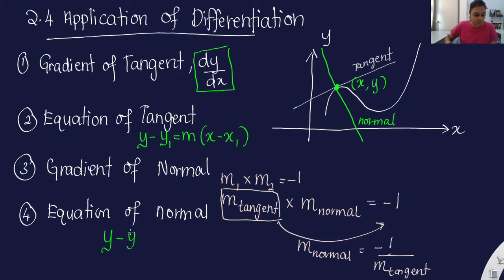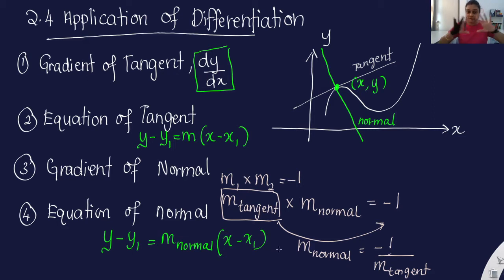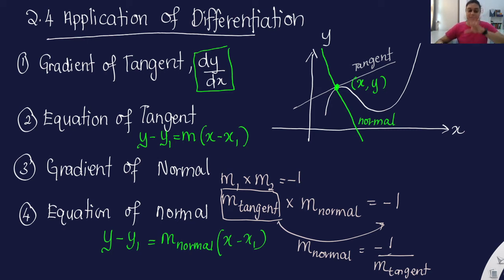For the equation of normal, it follows the same format as the equation of tangent: y minus y1 equals gradient of normal times x minus x1. That's all. This is the only main thing you need to know for this subtopic — this application part. So now I'm going to give an example. Let's see how we can solve based on these formulas.